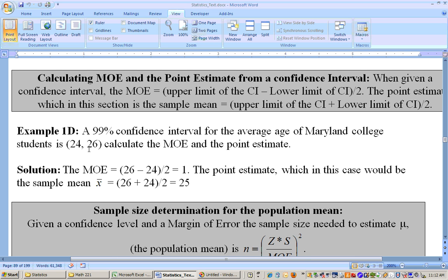To get the point estimate, which would be the sample mean, you add the two together and divide by 2. So add these two together, you get 50 divided by 2 is 25.